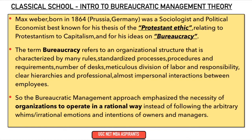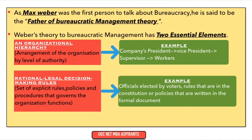The bureaucratic management approach gives importance to the necessity of organizations to operate in a rational way — no bias — instead of following the arbitrary whims or irrational emotions and intentions of owners and managers. As Max Weber was the first person to talk about bureaucracy, he is said to be the father of bureaucratic management theory. The father of scientific management theory is F.W. Taylor and the father of general management theory is Henry Fayol.